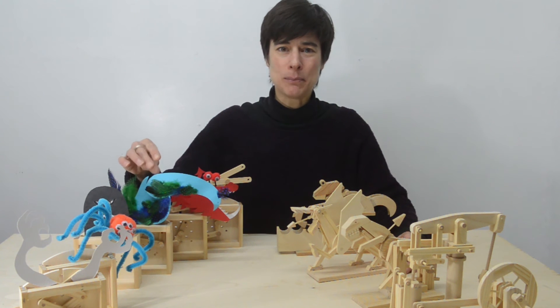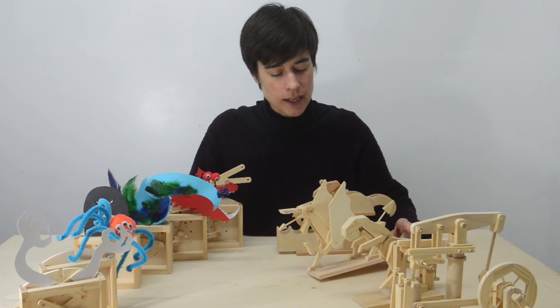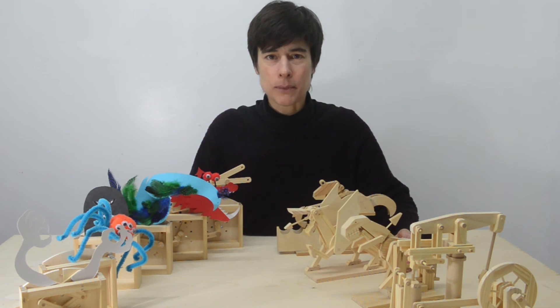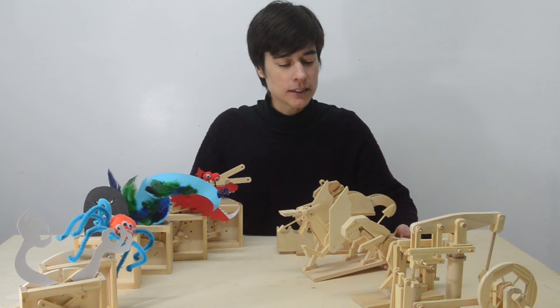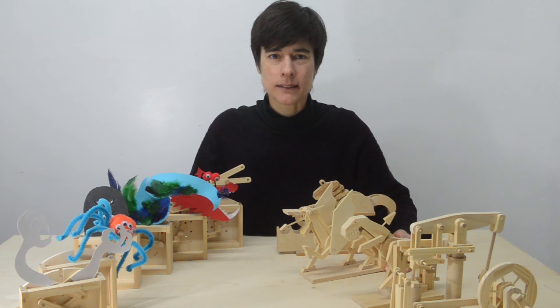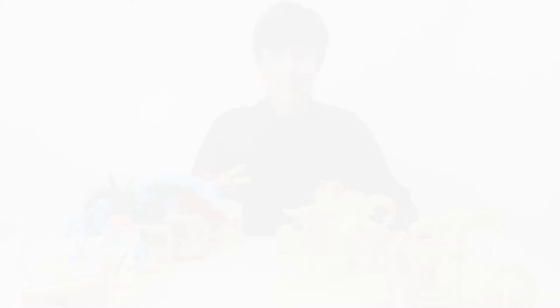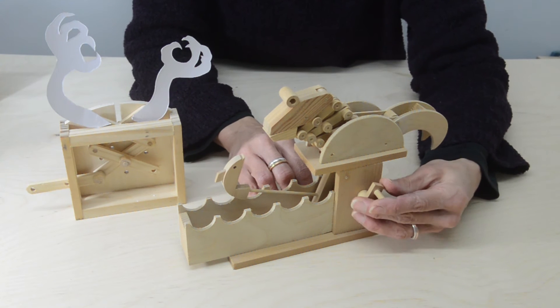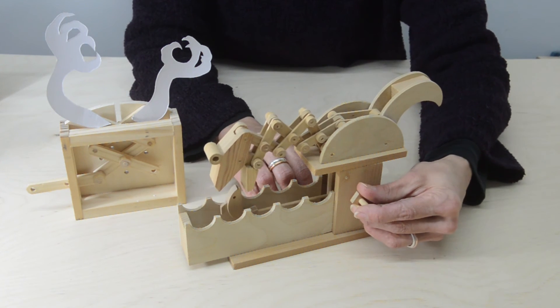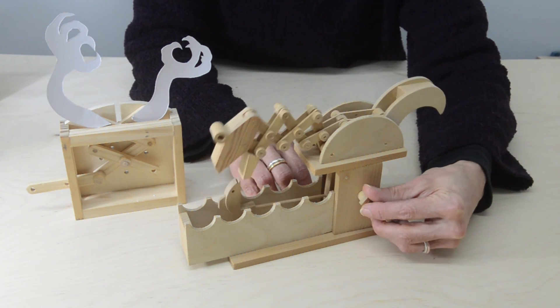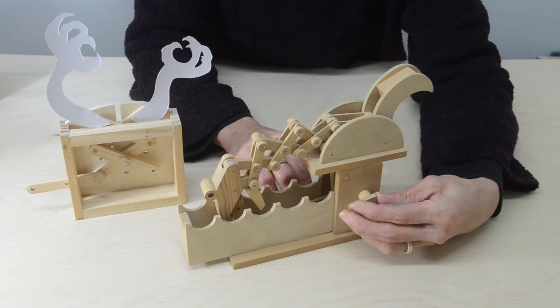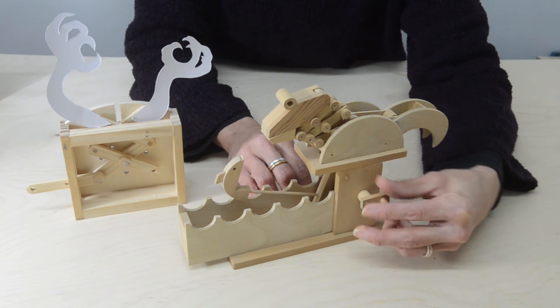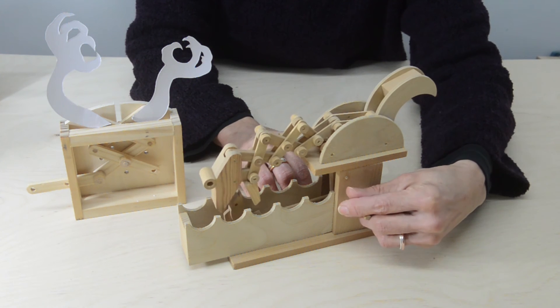Now we've had a look at these simple models, let's have a look at some more complicated timber kit models and see how the linkages are helping the mechanisms work. So here we've got a funny little creature stretching his neck out to try and gobble up the fish. How do you think the linkages are working in his neck? How would you describe them and how are they working?